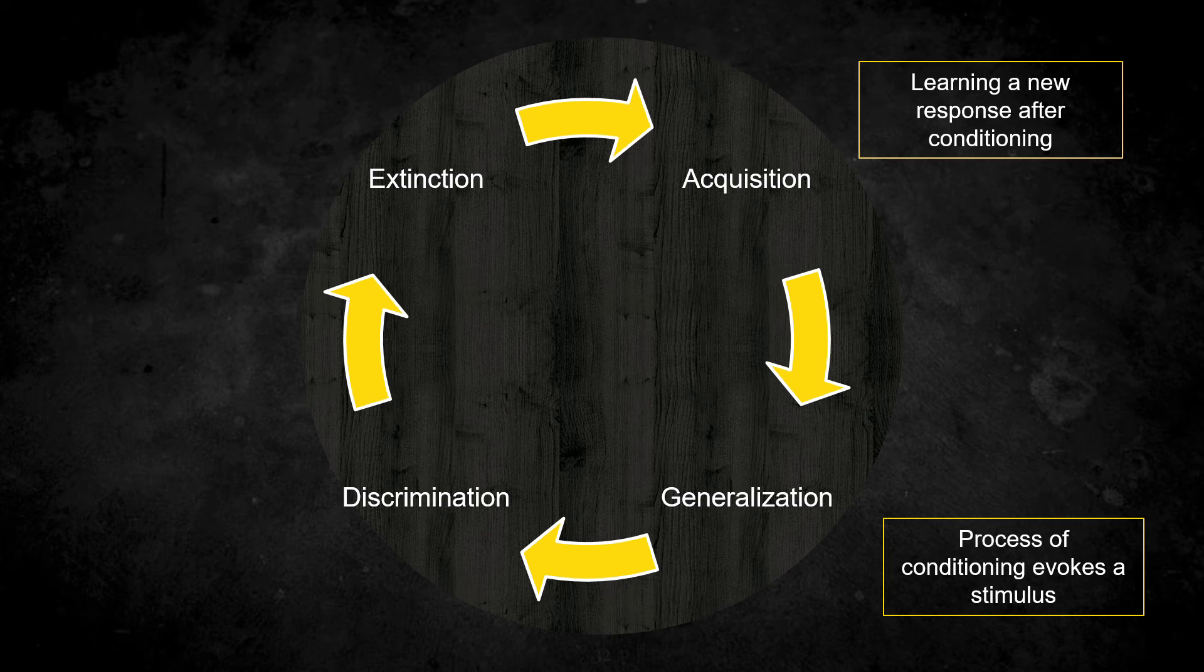So acquisition basically is learning any kind of new response after the conditioning. Generalizing is the process of conditioning which is evoked after a stimulus. So suppose a child has had a very painful experience in a dental operator and he remembers the white coat that you're wearing. So later whenever he sees a white coat as I said he is going to start getting scared, he's going to remember what he faced last time and he's going to relate the same. So there is a generalization that the child is going through, what happened before will definitely happen again.